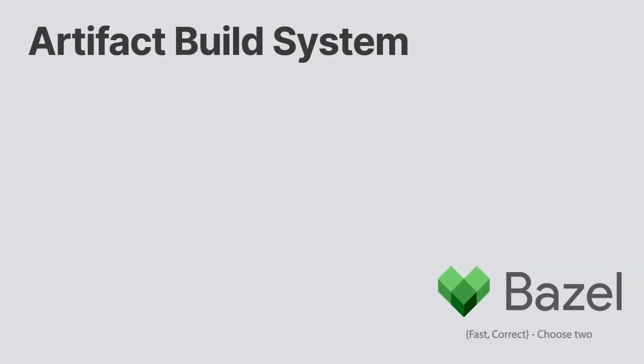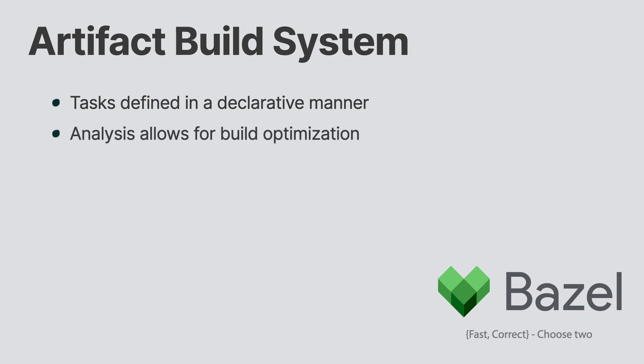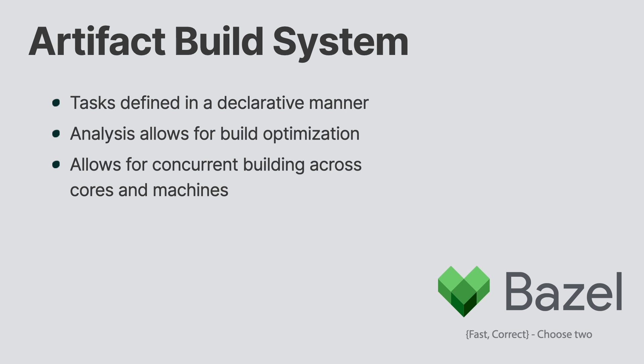Bazel is an artifact-based build system. Developers define the tasks, but Bazel defines how those tasks will be built, meaning targets are written in a declarative manner. By analyzing all the various components of a build, Bazel can optimize the build process. If nothing was previously changed, Bazel will not rebuild. Better still, it analyzes all the various inputs of all running tasks, and if there isn't a dependency from previous tasks, Bazel will run build targets in parallel. This build can expand to other developer machines, creating a distributed build network. Bazel even leverages remote building, which you'll discover later in this course.